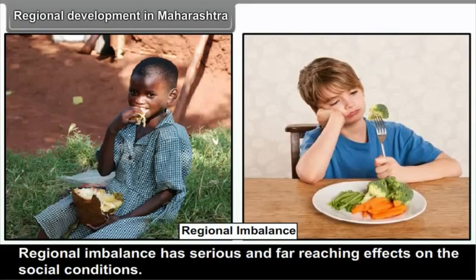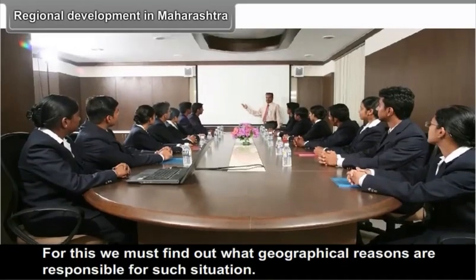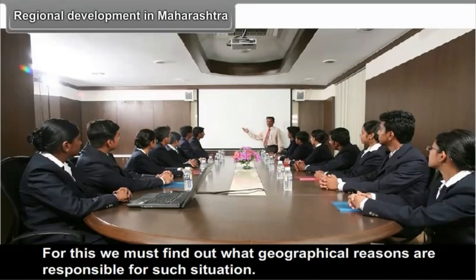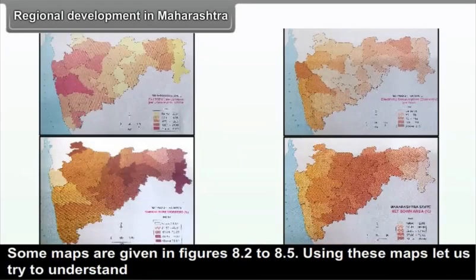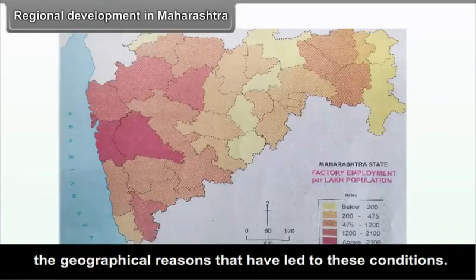Regional imbalance has serious and far-reaching effects on social conditions. Hence, extra efforts need to be taken to reduce the imbalance. For this, we must find out what geographical reasons are responsible for such situations. Some maps are given in figures 8.2 to 8.5 to help us understand the geographical reasons that have led to these conditions.